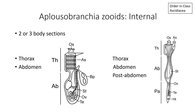What about the internal characteristics of Aplusobranchia zoids? It's pretty easy to differentiate Aplusobranchia from Stolidobranchia and Phlebobranchia if you pull the zoids out of the tunic. Aplusobranch zoids have either two or three body sections, whereas Stolidobranchs and Phlebranchs have a single body section. On the left, we see an example of an Aplusobranch with two body sections: a thorax (TH), which contains the oral and atrial siphons as well as the brachial sac; and an abdomen (AB), which contains the stomach, the entire digestive system, as well as the gonads — the ovaries and testes.